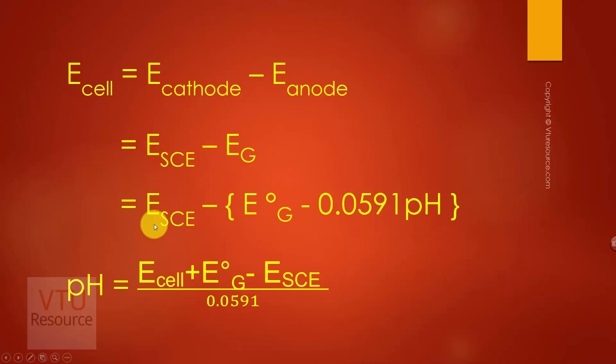The saturated calomel electrode potential is constant, and E°G is constant. Rearranging the equation for pH, we get pH equals E cell plus E°G minus E SCE divided by 0.0591.